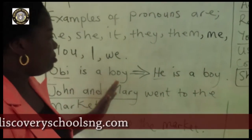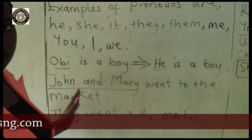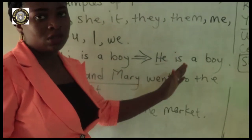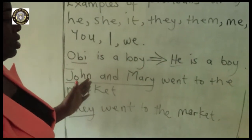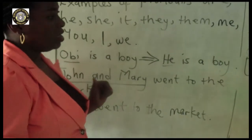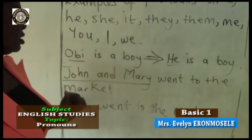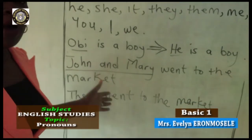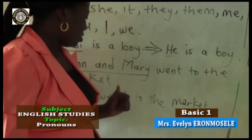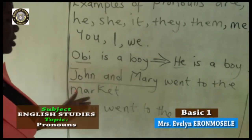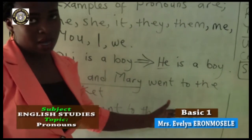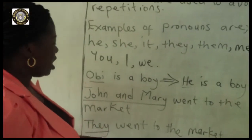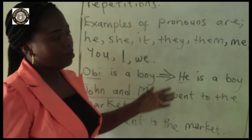We also have another example: John and Mary went to the markets. Because John is singular and Mary is singular, they become plural together. We cannot say he went to the markets, so we say they went to the markets, because it is more than one person. We are referring to two persons, so we say they went to the markets.